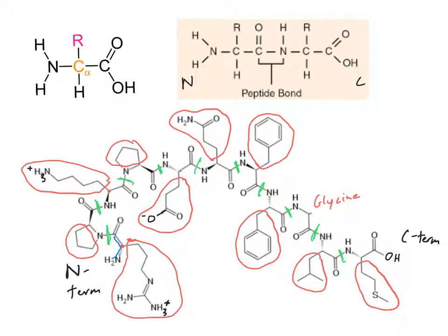Looking at the side chains for classification: one with a positive charge at the end is basic — basic amino acids have accepted an extra proton and gained a positive charge, since bases are proton acceptors. A side chain made of just carbons is nonpolar, because there are no polar bonds within it. Another positive charge indicates another basic amino acid. A negative charge at the end indicates an acidic amino acid — an acid is a proton donor that has already donated its hydrogen, leaving it negatively charged. A side chain with a carbon-oxygen double bond and carbon-nitrogen bonds is polar. Phenylalanine and other hydrocarbon-only side chains are nonpolar, and methionine with its sulfur is also a nonpolar amino acid.